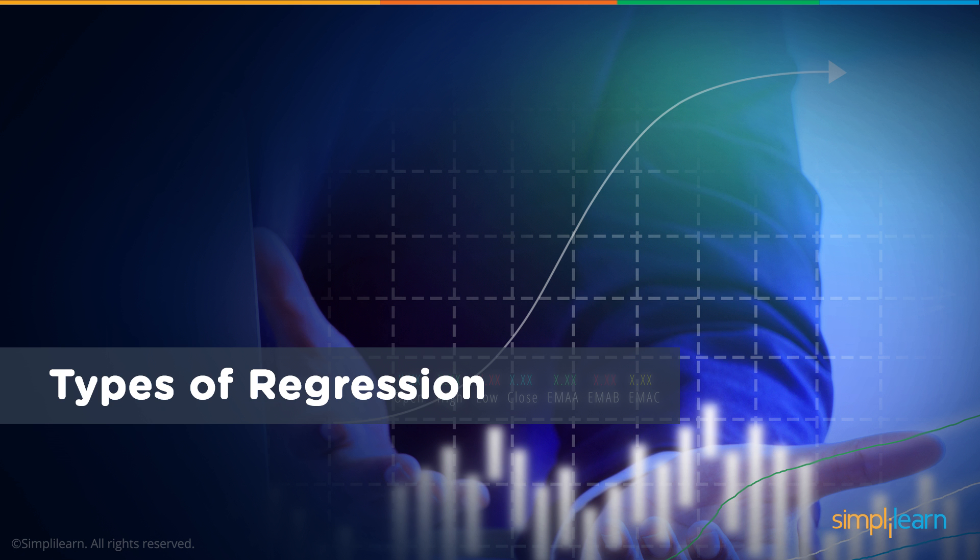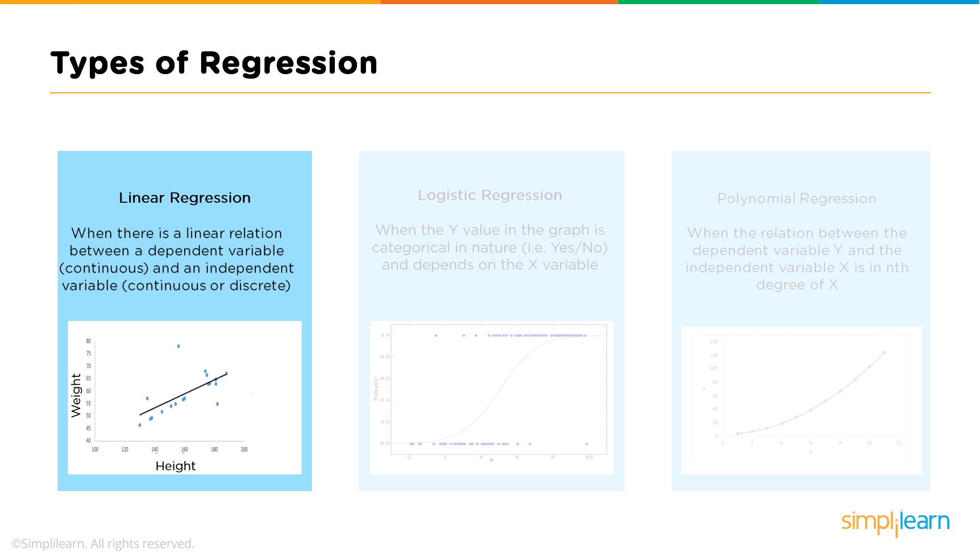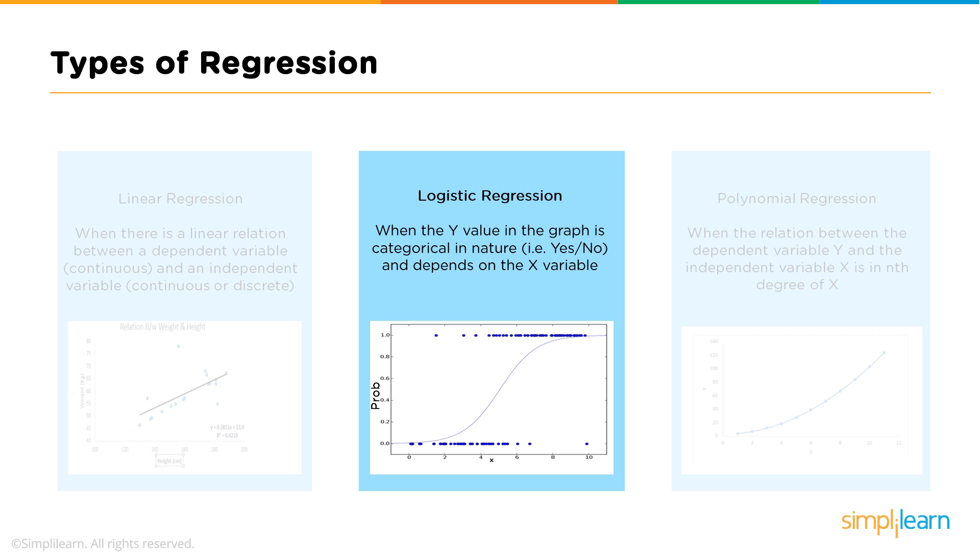There are various types of regression. Linear regression, logistic regression, multiple linear regression, polynomial regression. And there are others, decision tree regression, random forest regression. But linear regression is probably the most well-known. And by definition, when there is a linear relationship between a dependent variable, which is continuous, and an independent variable, which is continuous or discrete, we would use linear regression. When the y value in the graph is categorical, such as yes or no, true or false, they voted, they did not vote, they purchased something, they did not purchase something, it depends on the x variable.